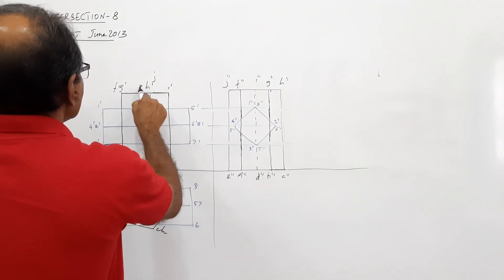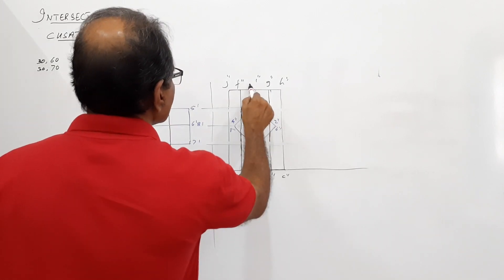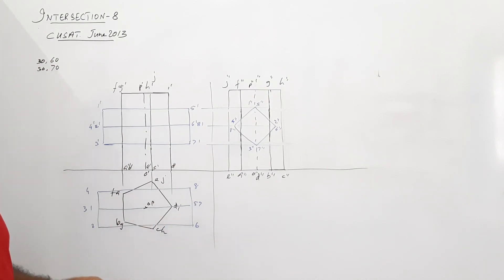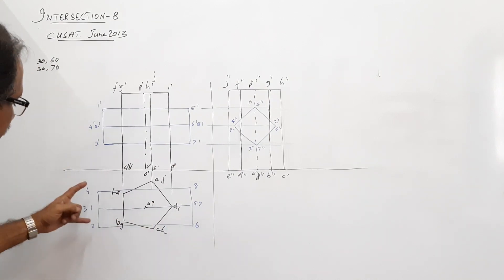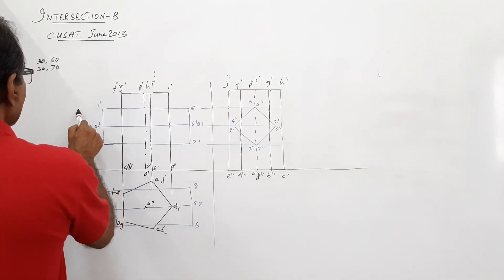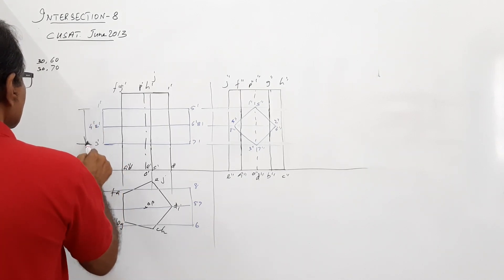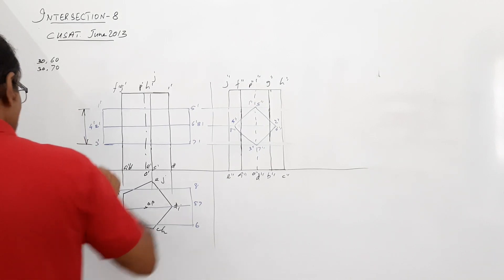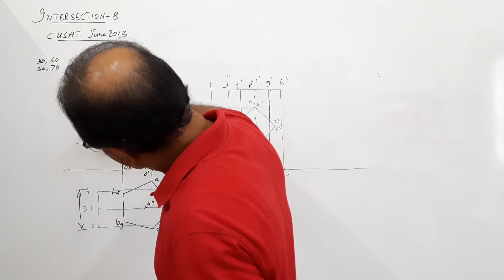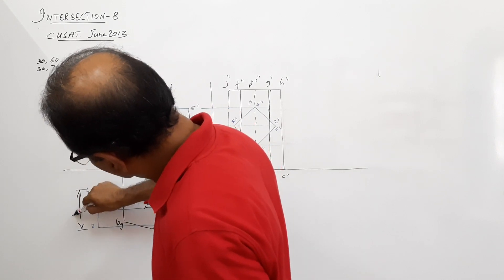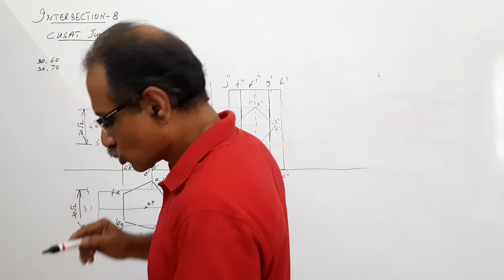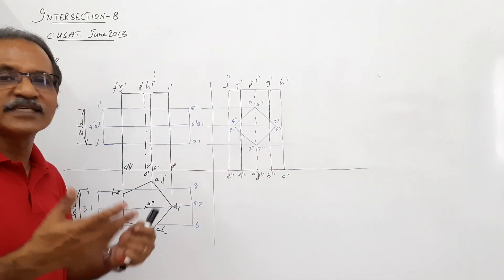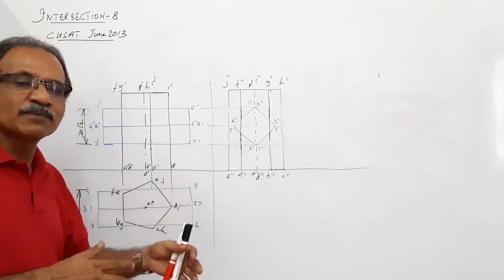The axis is O-dash P, marked at the geometrical center. In the plan it is O-double-dash P-double-dash. The square prism, with side 30, gives a rectangle of 30√2 in both the plan and elevation. The width in the elevation is also 30√2. The axis length given is 70, but in intersection of solids, the axis length does not play any role.